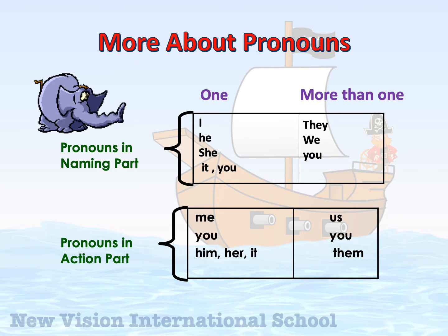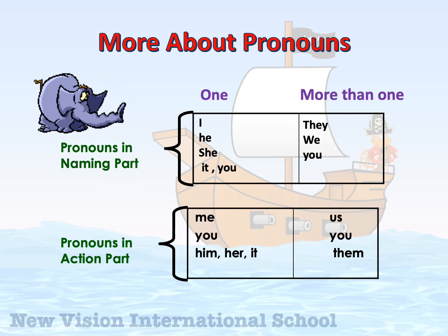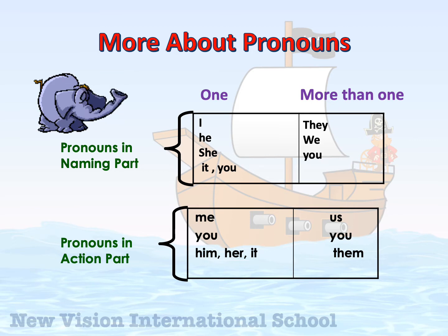Let's take a look at this table. Look at the pronouns in the naming part. For one, we have: I, he, she, it, you. For more than one, we say: they, we, and also you — you is used for either one or more than one. Now look at the second table: pronouns in the action part. For only one we use: me, you, him, her, and it. For more than one we use: us, you, and them.